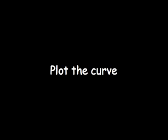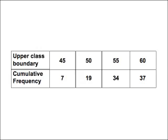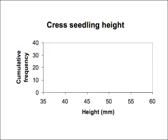Now we need to plot the cumulative frequencies against the upper class boundaries to draw the curve. This is what the data we're plotting looks like. You don't need to draw a new table in exams — there's normally a table you fill in. The upper class boundary is plotted on the horizontal axis, and the cumulative frequency is always plotted on the vertical axis. A suitable graph scale might look like this. Notice how the height goes from 35 up to 60mm, but the cumulative frequency axis always starts at zero.